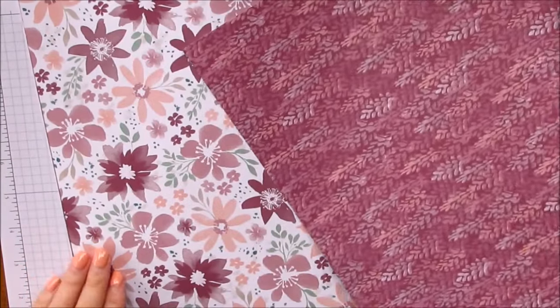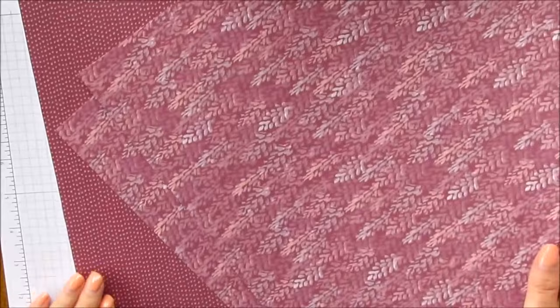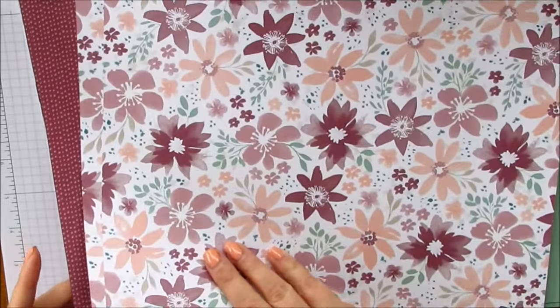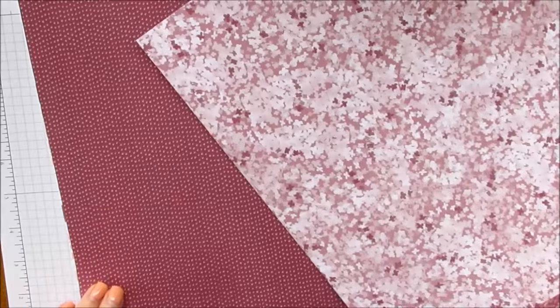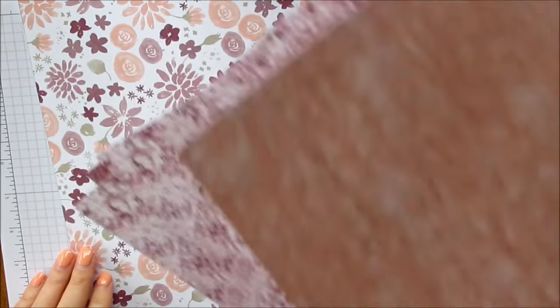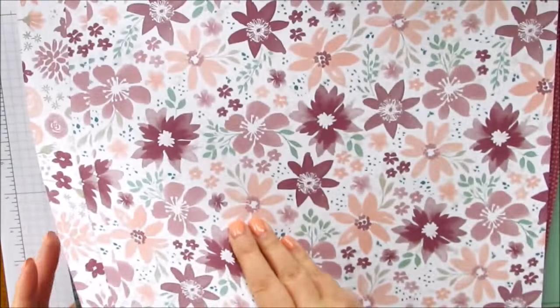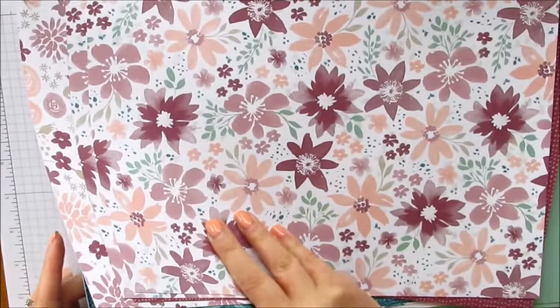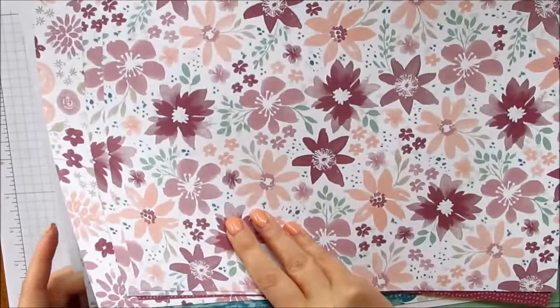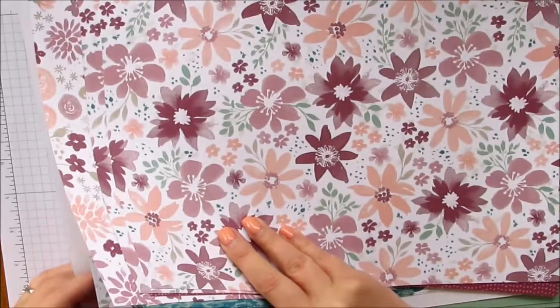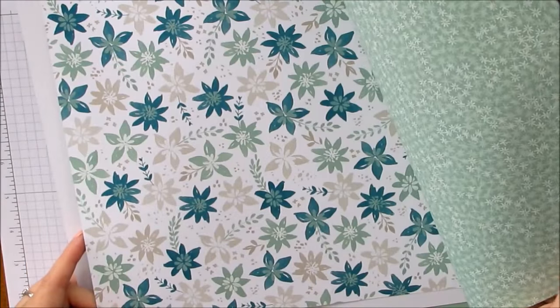So, double-sided, 12 by 12, gorgeous colors, absolutely gorgeous. Let's give you a quick flick through. So you have two of each. These are so, so pretty. Okay, just gives you an idea of what's in that set.